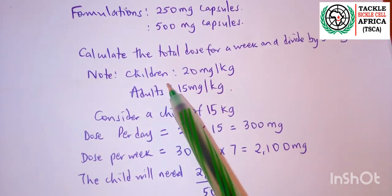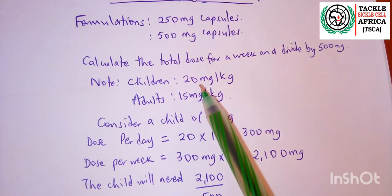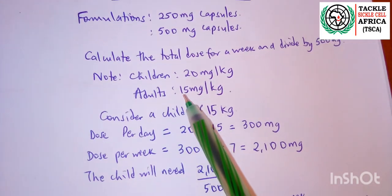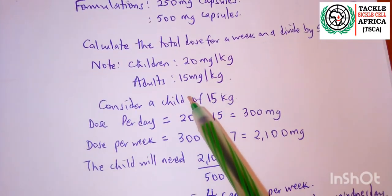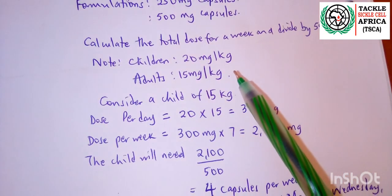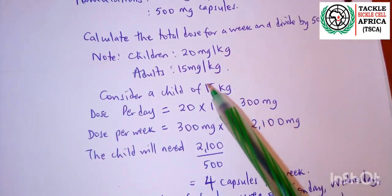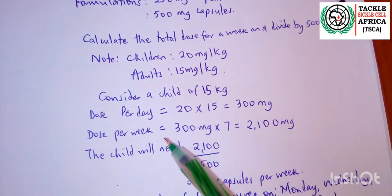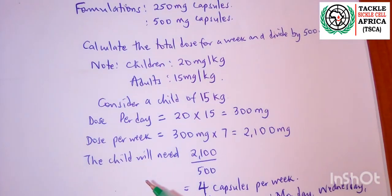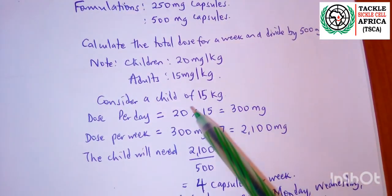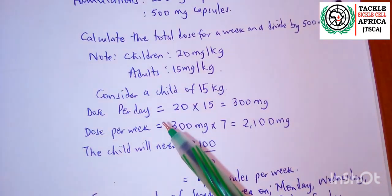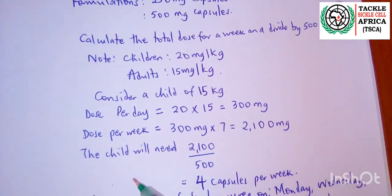For children we always use 20 milligrams per kilogram, and for adults we use 15 milligrams per kilogram. This is because hydroxyurea tends to have higher risks of toxicity in adults due to severe organ damage which can occur in children living with sickle cell disease who are not well managed.